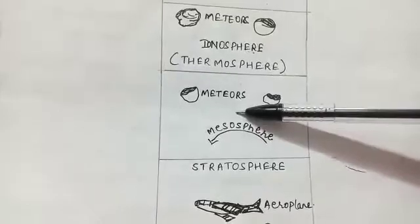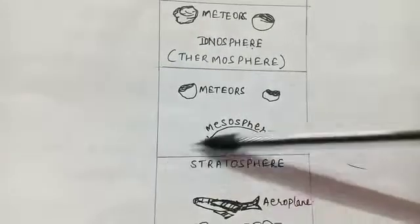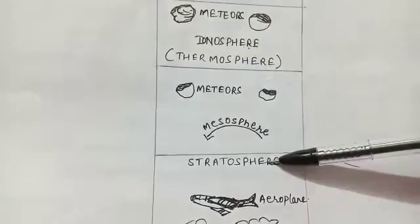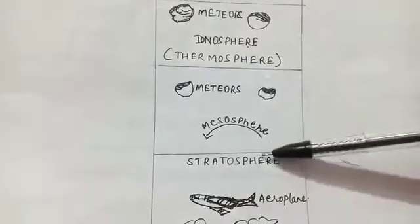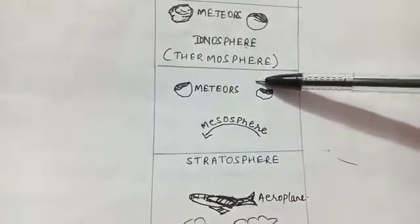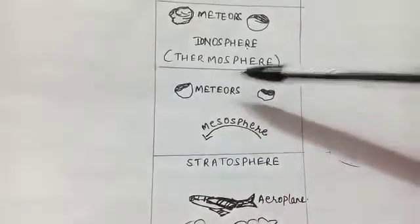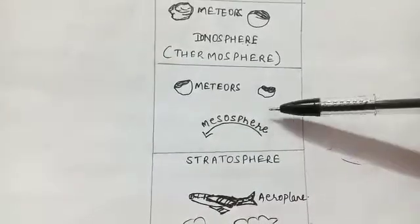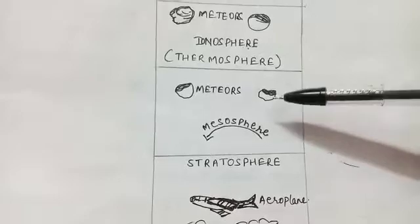The narrow boundary that separates mesosphere from stratosphere is called stratopause. In this layer the temperature of the air decreases with the increasing height. Meteors also burn in this layer due to friction upon entering the earth's atmosphere from the space.